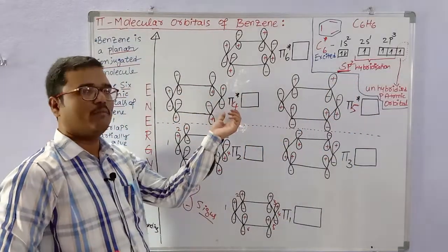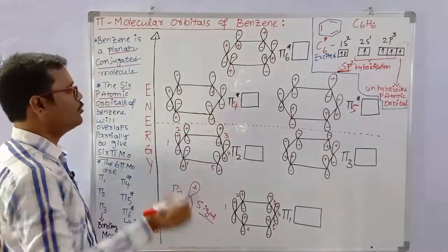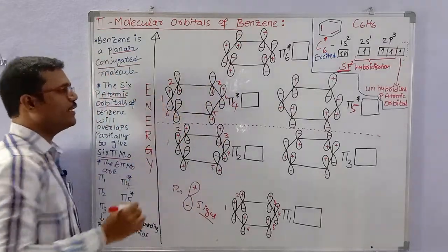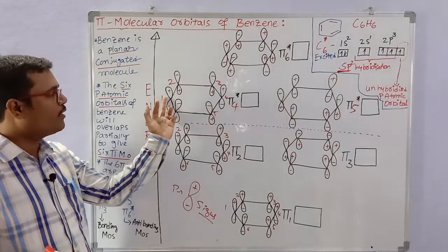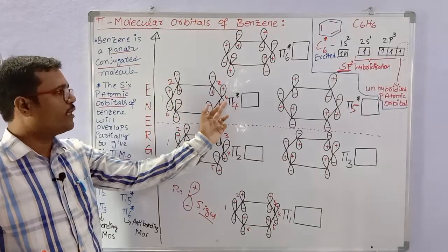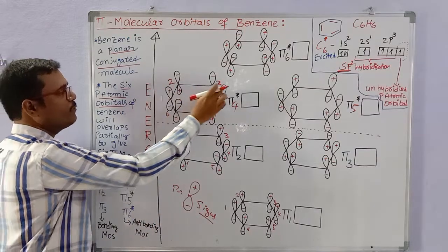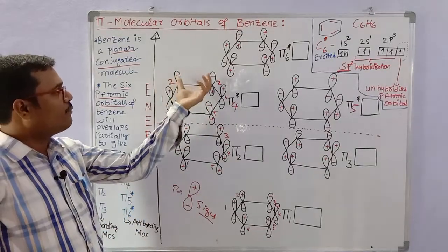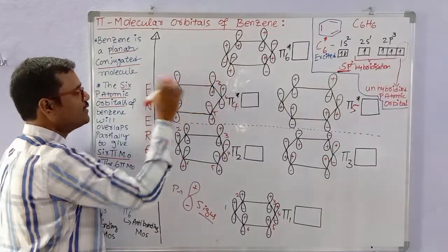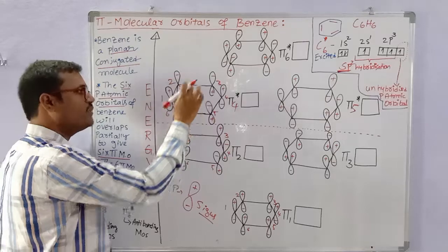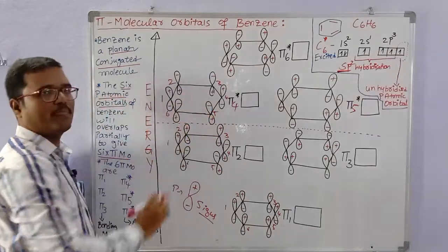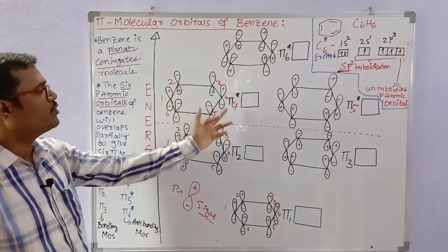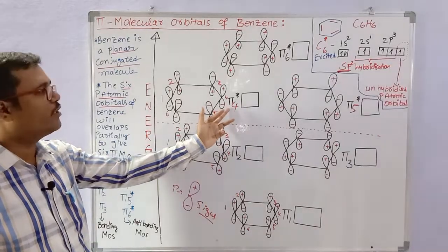For the pi4* anti-bonding molecular orbital, carbon atoms 1 and 4 have the same sign — top lobe plus, bottom lobe minus. But carbons 2 and 3 have the opposite sign — top lobe minus, bottom lobe plus. Similarly, carbons 5 and 6 have top lobe minus, bottom lobe plus. The first and fourth atomic orbitals are at high energy, forming the pi4* molecular orbital.